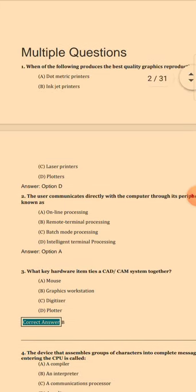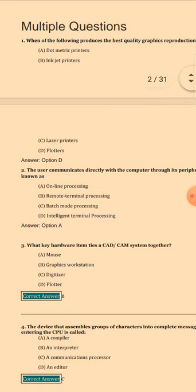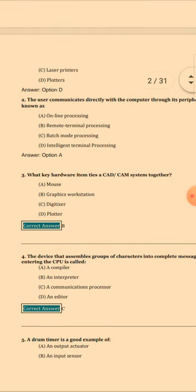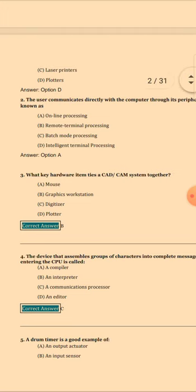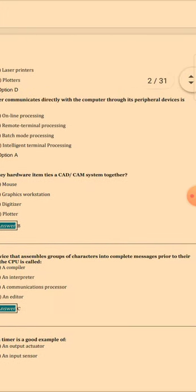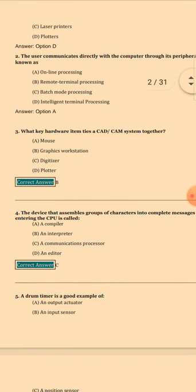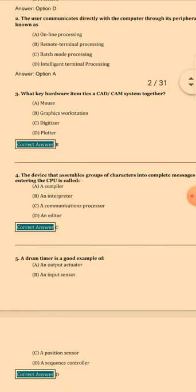Question 3: What key hardware item ties a CAD and CAM system together? Answer is option B. Question 4: The device that assembles a group of characters into a complete message prior to entering the CPU is called — the answer is option C: A communication processor.